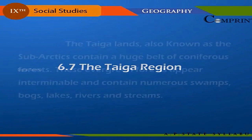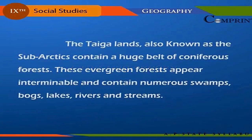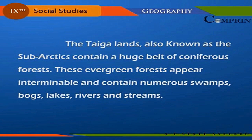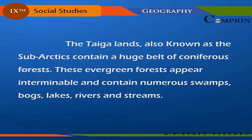The taiga region, also known as the subarctic lands, lies below the Arctic and contains a huge belt of coniferous forest. These evergreen forests appear interminable and contain numerous swamps, bogs, lakes, rivers, and streams.